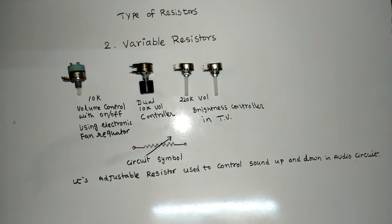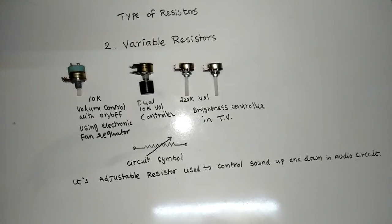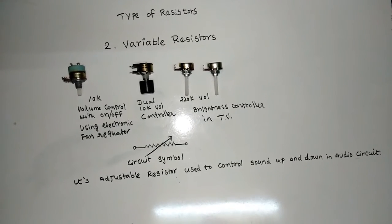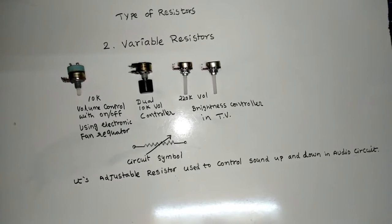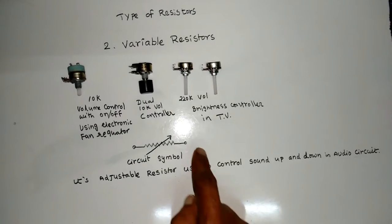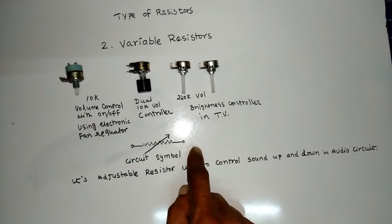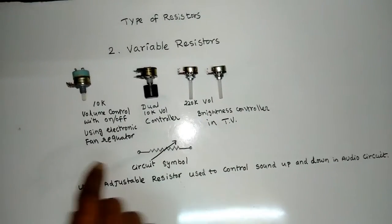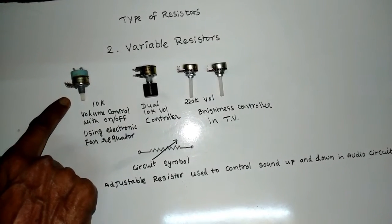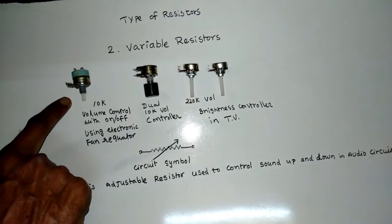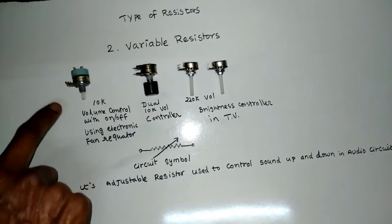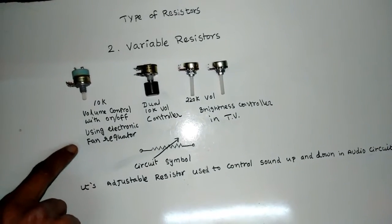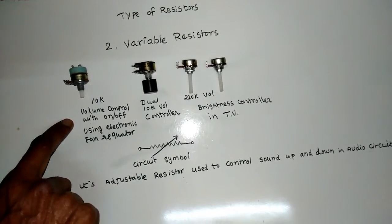Second one: Variable Resistor. It is an adjustable resistor. Used to control sound up and down in audio circuits. This is the electronic circuit symbol and here this type of controller having with on-off switch used in electronic fan regulator to control fan speed.